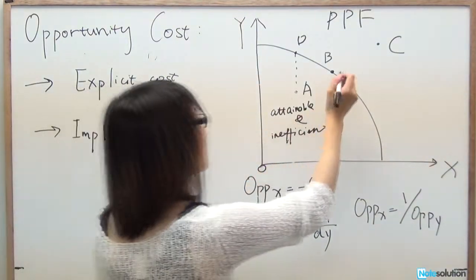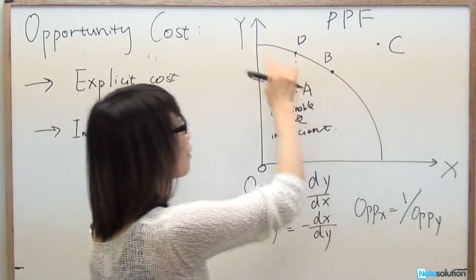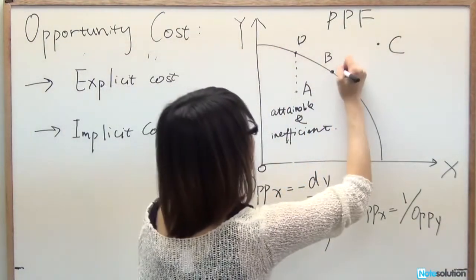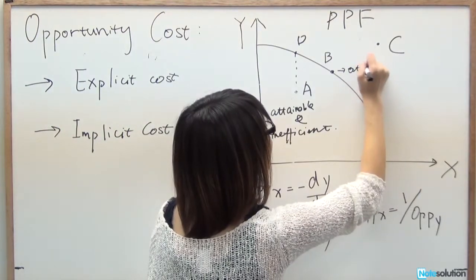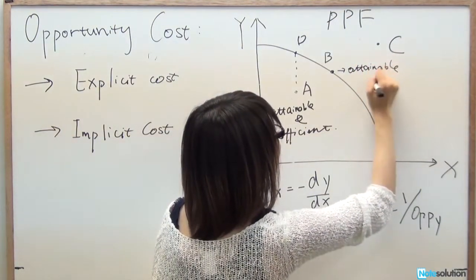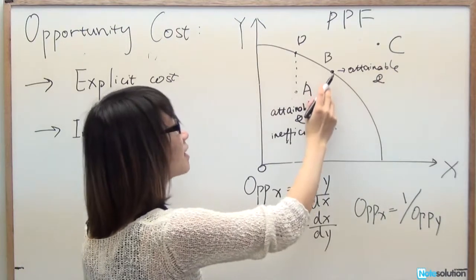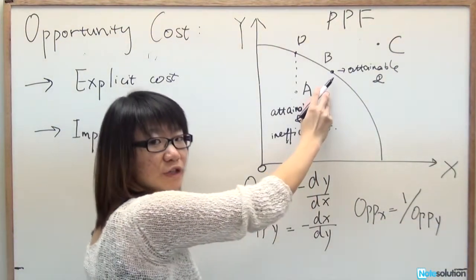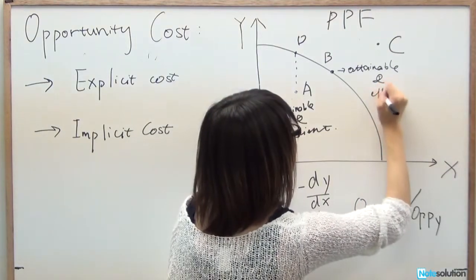Point B is on the PPF line, so it is attainable. By consuming at point B, we use up all of our resources. Therefore, point B is also efficient — it is both attainable and efficient.